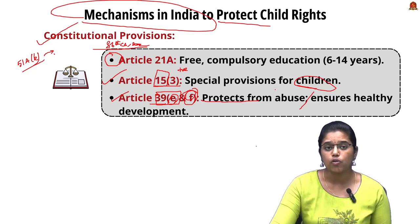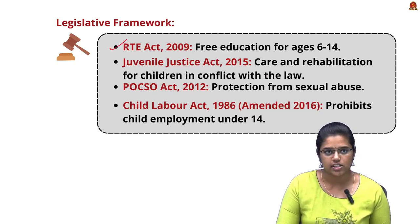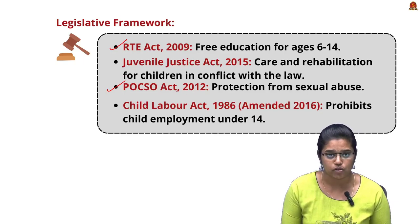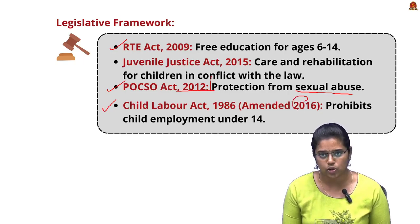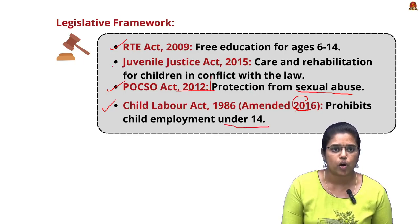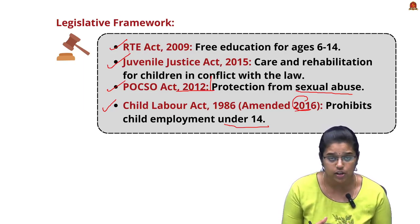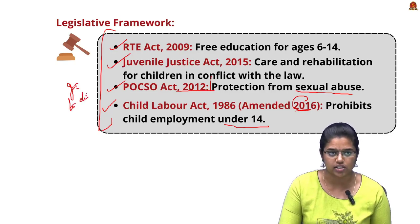Legal provisions for child rights include: the RTE Act discussed in detail earlier; the POCSO Act (Protection of Children from Sexual Offences) of 2012, which protects children from sexual abuse; the Child Labour Act, recently amended in 2016, which prohibits employment of children under 14; and the Juvenile Justice Act, which provides care and rehabilitation services for children in conflict with the law.